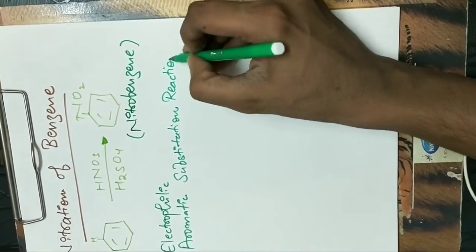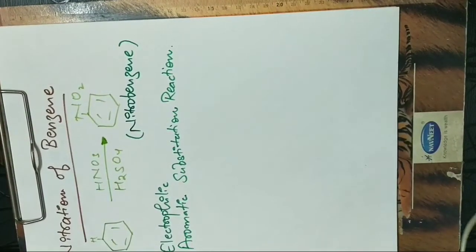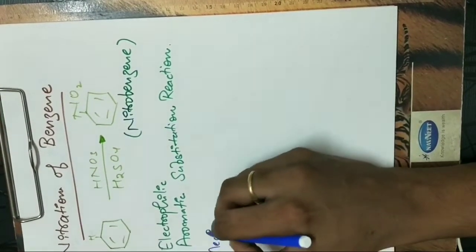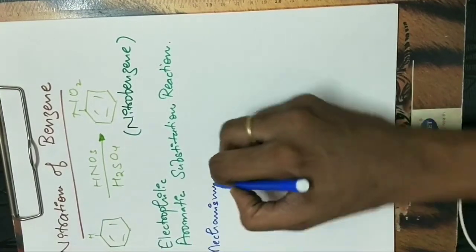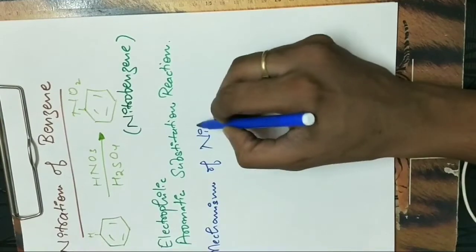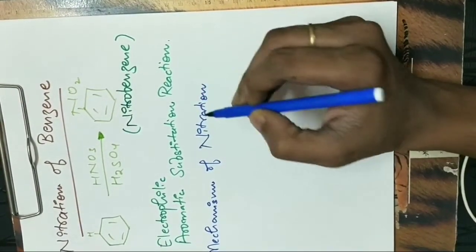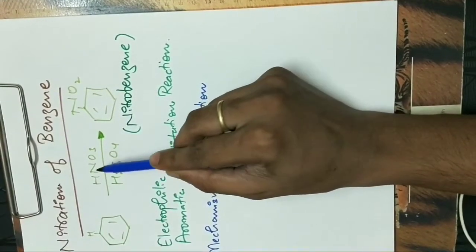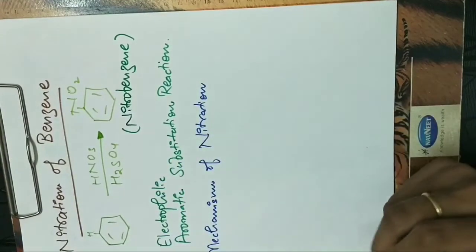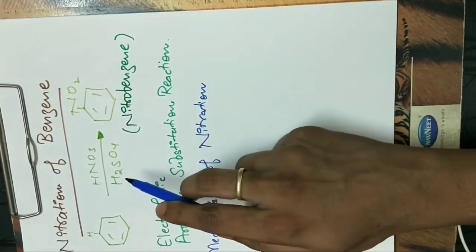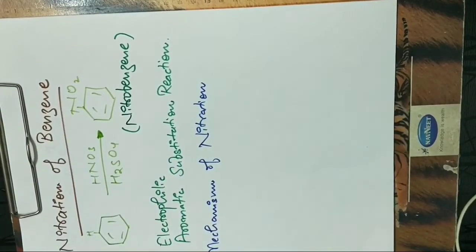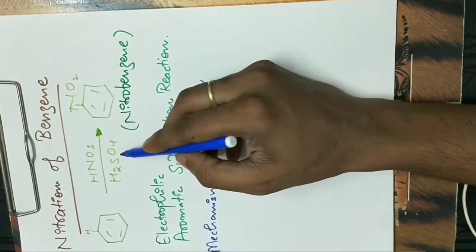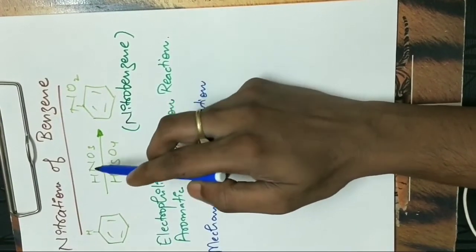Now let us focus on the mechanism of nitration. Here two acids are present: HNO3 and H2SO4, nitric acid and sulfuric acid. Nitric acid is a weak acid and H2SO4 is a strong acid, so here strong acid will act as an acid and weak acid will act as a base.